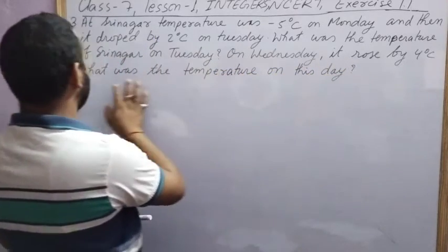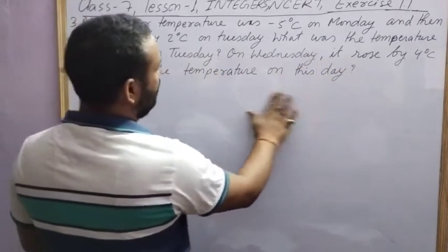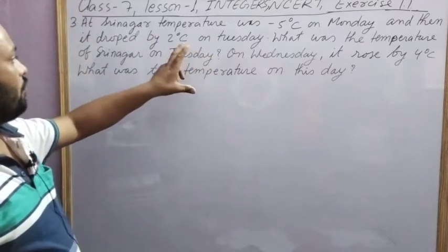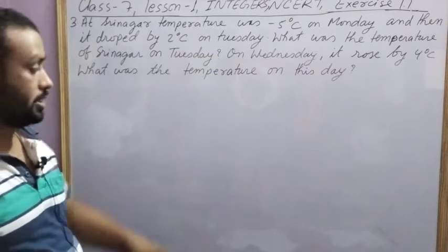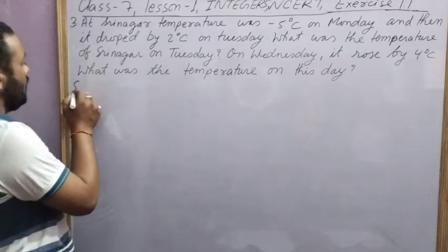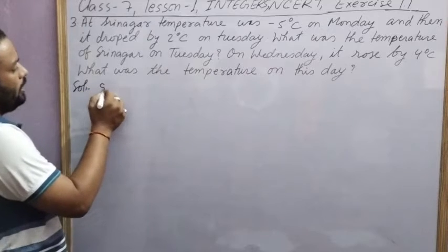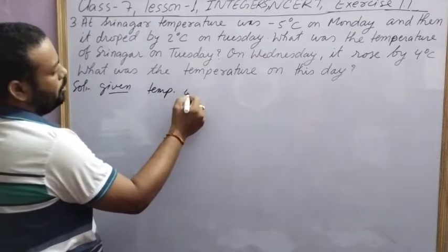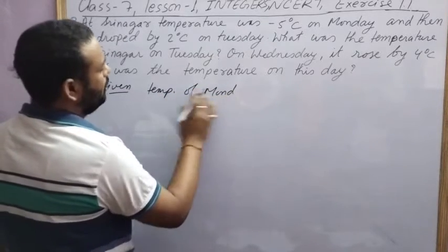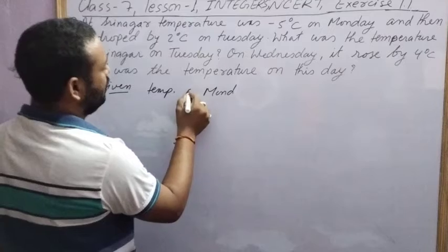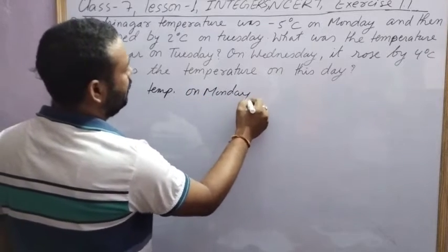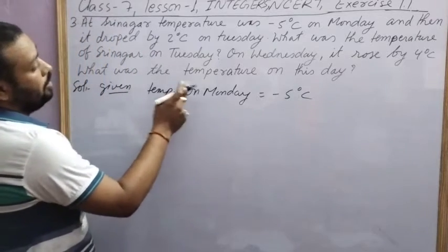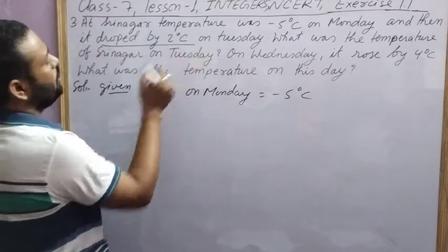On Wednesday, it rose by 4 degrees Celsius. What was the temperature on this day? The temperature of Monday is given. We have to find the temperature of Tuesday and temperature of Wednesday. How will you solve? Given: temperature on Monday is equal to minus 5 degrees Celsius.